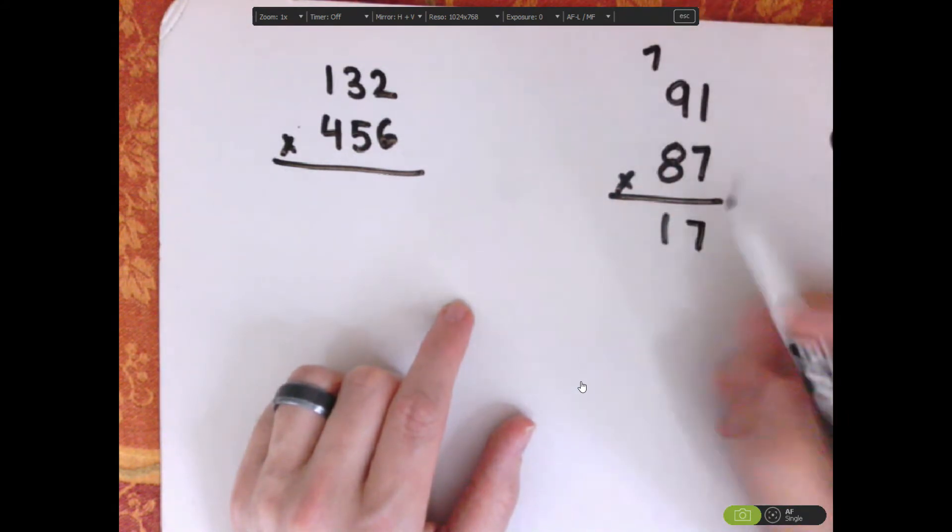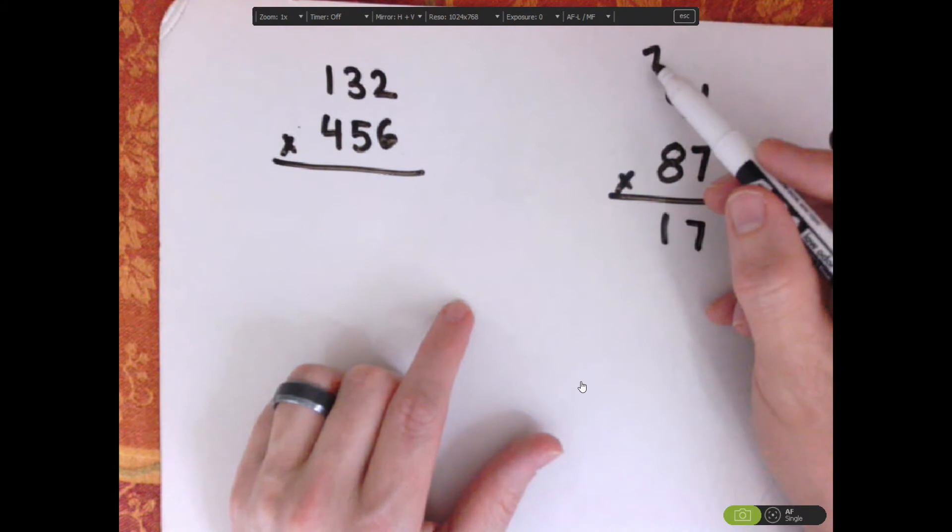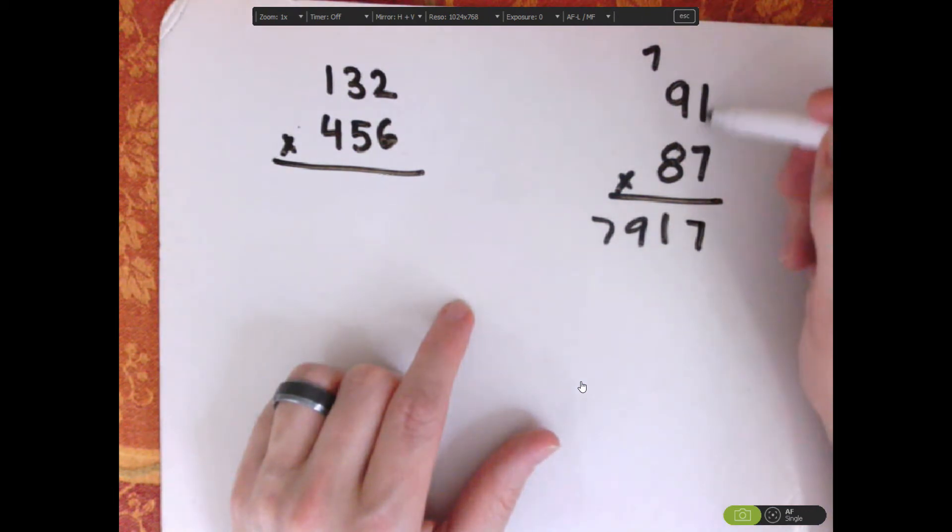Now, 8 times 9 is 72, 72 plus 7 is 79. So, notice that we did a vertical, then a cross, we multiplied across, add those, and then we carried. So, in this method you carry, and then we did 9 times 8, the vertical, and then added the carry.